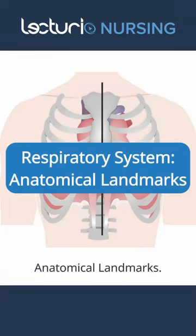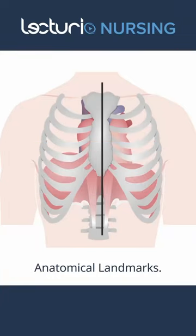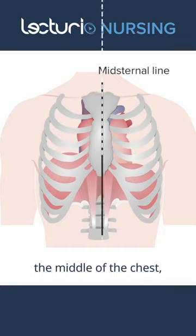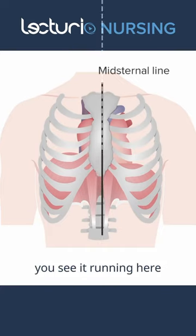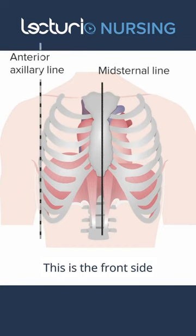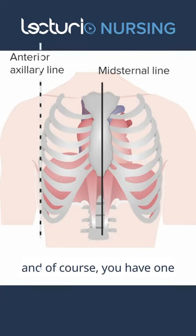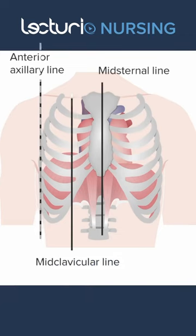Let's take a look at anatomical landmarks. See the black line running through the middle of the chest — we call it mid, and you can see it running through the sternal. This is the front side anterior axillary line, and of course you have one on both sides.